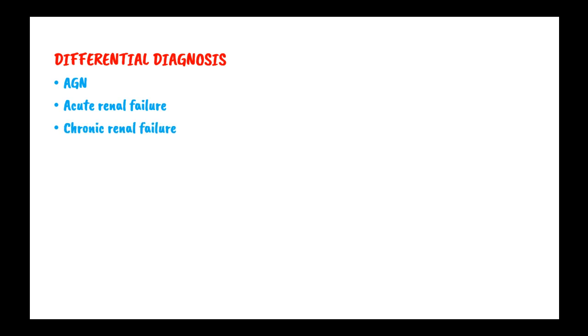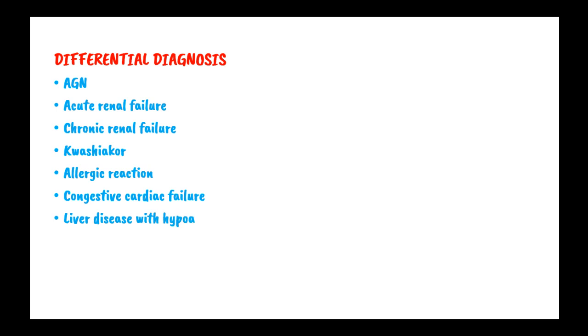The differential diagnosis when encountering a patient with features of nephrotic syndrome includes acute glomerulonephritis, acute renal failure, chronic renal failure, kwashiorkor, allergic reactions, congestive cardiac failure, liver disease with hypoalbuminemia, and protein-losing enteropathy.